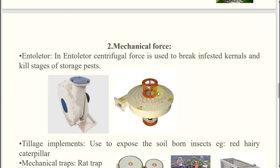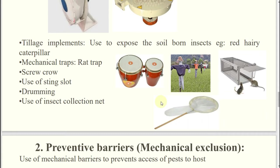Then coming to tillage implements — these are used to expose soil-borne insects, just like deep summer plowing in cultural method. If the question comes: deep summer plowing comes under cultural method, tillage comes under cultural method — but the use of a tractor for deep summer plowing, the use of tillage implements for tillage, makes it come under your mechanical method.